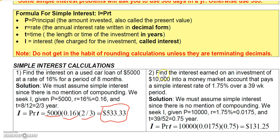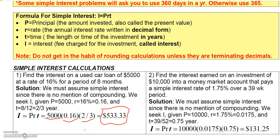Example 2: Find the interest earned on an investment of $10,000 in a money market account that pays a simple interest rate of 1.75% over a 39-week period. The principal is $10,000; the rate in decimal is 0.0175; and the time in years is 39/52, which equals 0.75 years. Multiplying: 10,000 × 0.0175 × 0.75 gives interest of $131.25. That's how you find interest when given the principal, rate, and time for simple interest. In the next video, I'll show you how to calculate the amount with simple interest.